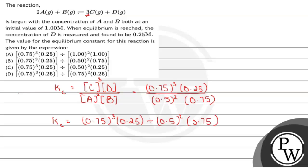So we can say that the value of equilibrium constant for the above reaction is given by the expression option number B. I hope you understood it well, thank you and best of luck.